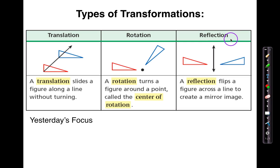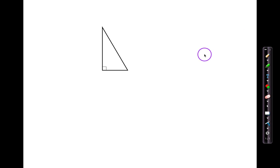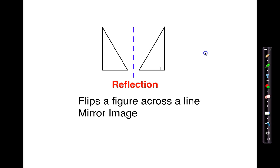Yesterday we did go over translation and today's focus is going to be on reflection. So quick recap: a reflection is basically when a figure is being flipped across a line to create a mirror image. Here we have a figure and notice it's going to be flipped across a vertical line creating a new image. This is what we call a reflection — it flips a figure across a line, which we refer to as the mirror image.